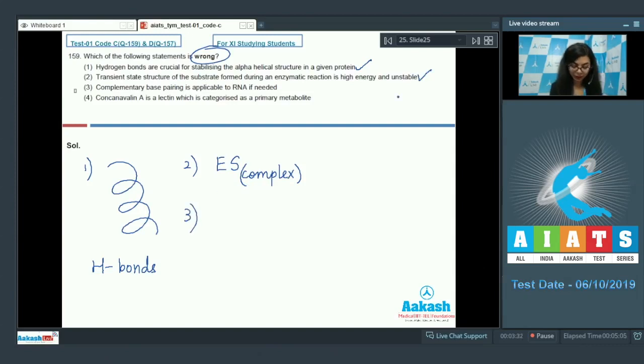Option 3, complementary base pairing is applicable to RNA if needed. That is right. RNA is usually a single-stranded structure, but complementary base pairing is possible in it with the help of hydrogen bonds. That is also correct. 4, concanavalin A is a lectin which is categorized as a primary metabolite. Concanavalin is a lectin but it is not a primary but a secondary metabolite. So this is incorrect. The correct answer here would become option number 4. Answer is 4.